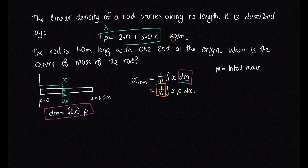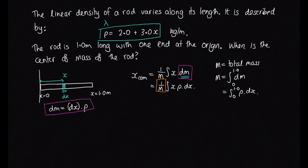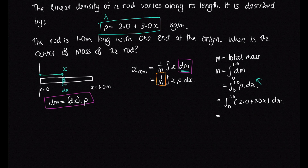To calculate the total mass, we again consider each of the little increments. We know the mass of each little increment — it's dm — and if we sum up all those increments along the rod we get the total mass. So the total mass is the integral of dm along the length, going from 0 to 1 metre. With dm = ρ dx, we substitute ρ = 2 + 3x to get the integral from 0 to 1 of (2 + 3x) dx.